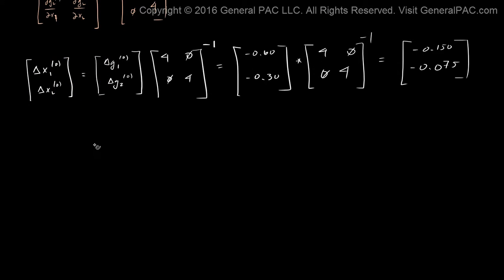Let's look at what we actually solved for. So the change of x1 for the zeroth iteration is equal to negative 0.150 and the change of x2 for the zeroth iteration is equal to negative 0.075, which also matches the book because that's where I get these answers from.